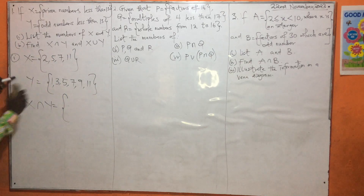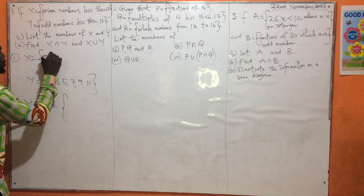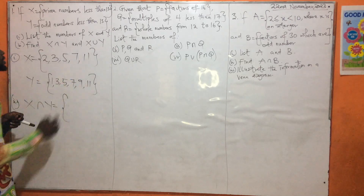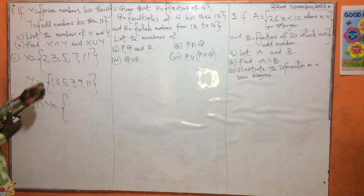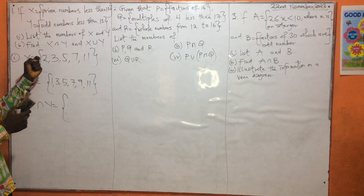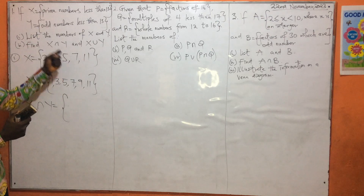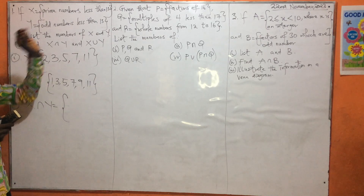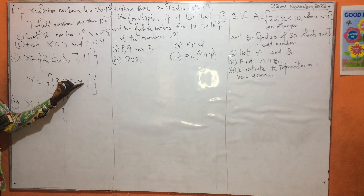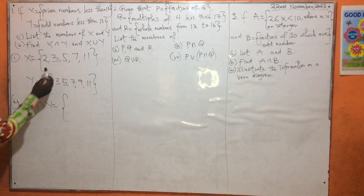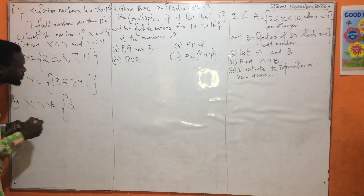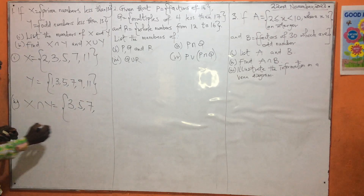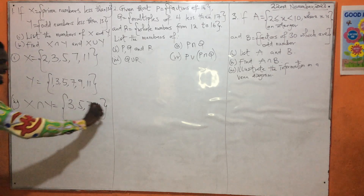For the prime numbers, we have 3 — don't forget that 3 is a prime number because it has 2 factors. So we have 2, 3, 5, 7, 11. These are the prime numbers less than 13. Now what are the common terms in both X and Y? What do we have in X and also have in Y? That becomes your intersection. So we have 3, 5, 7, and 11 as the intersection.